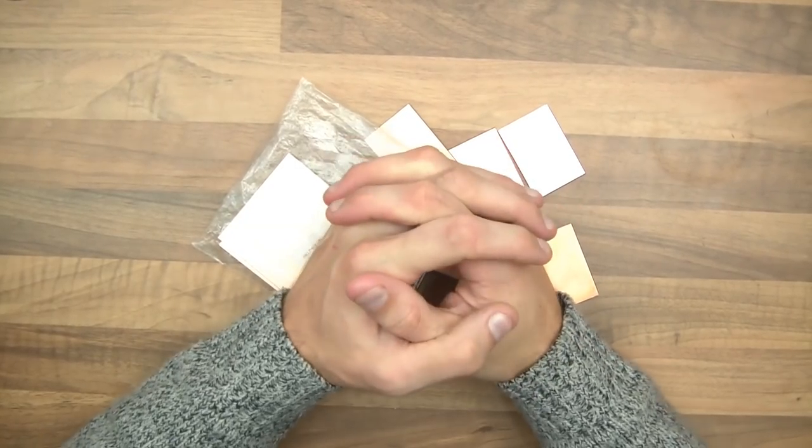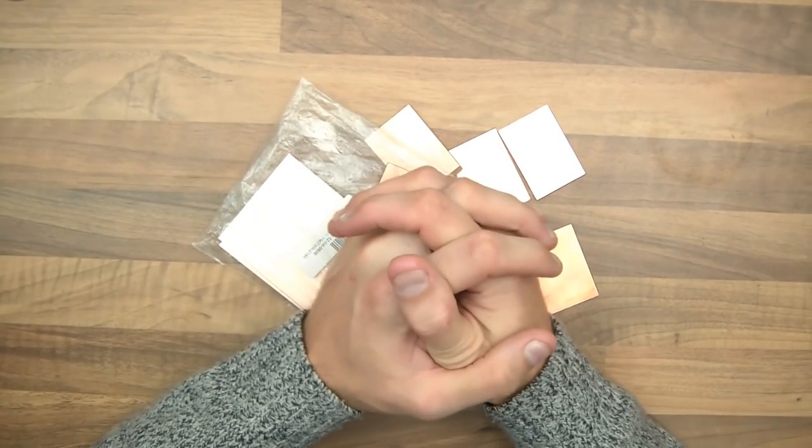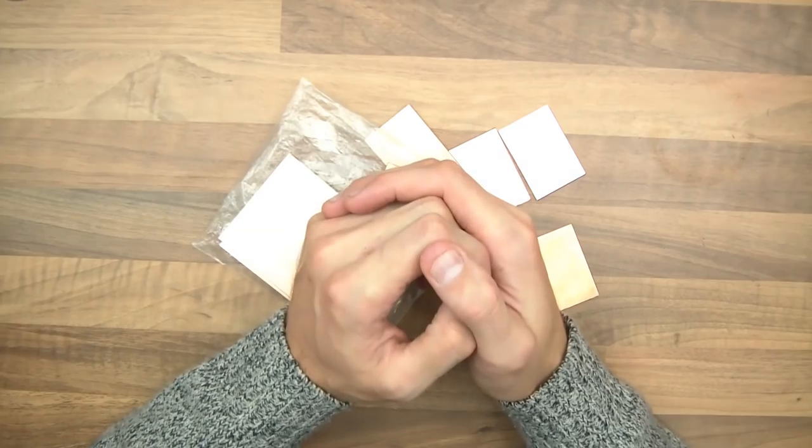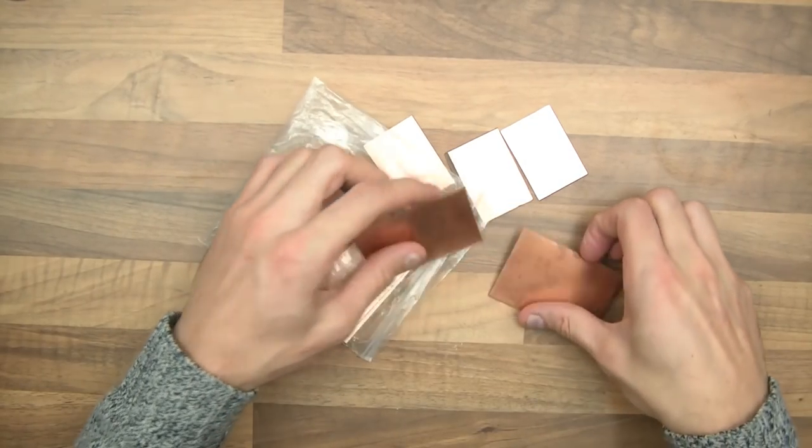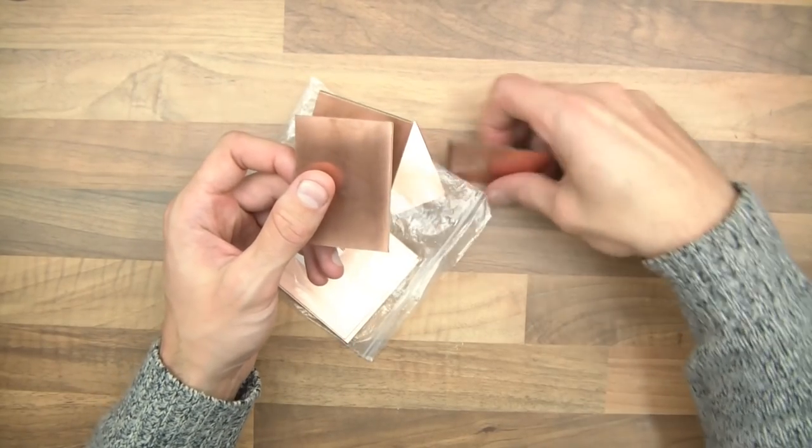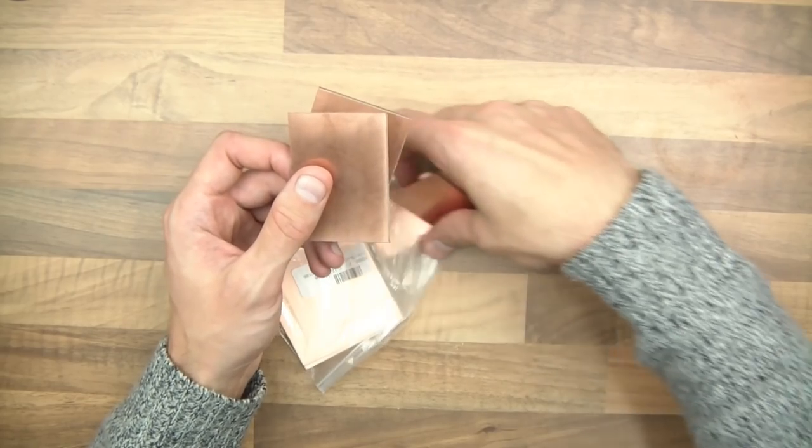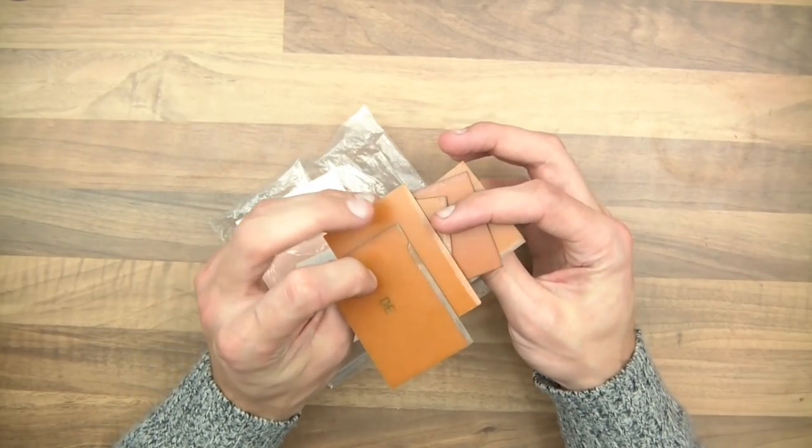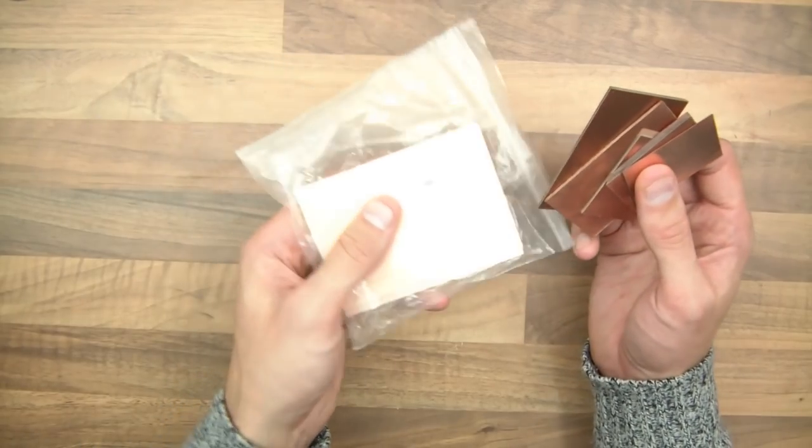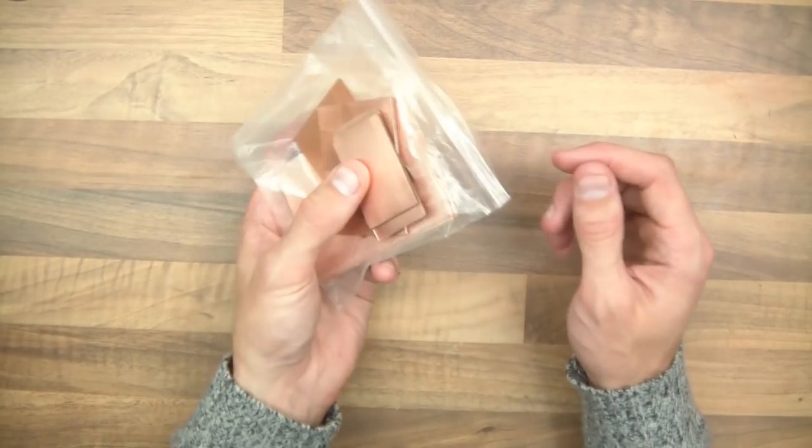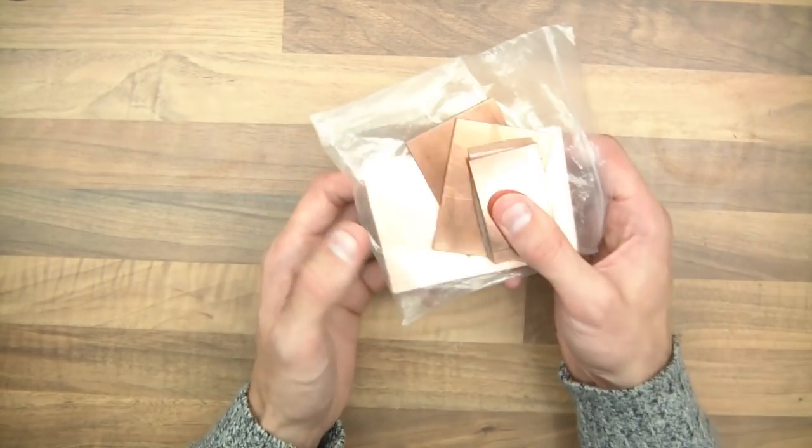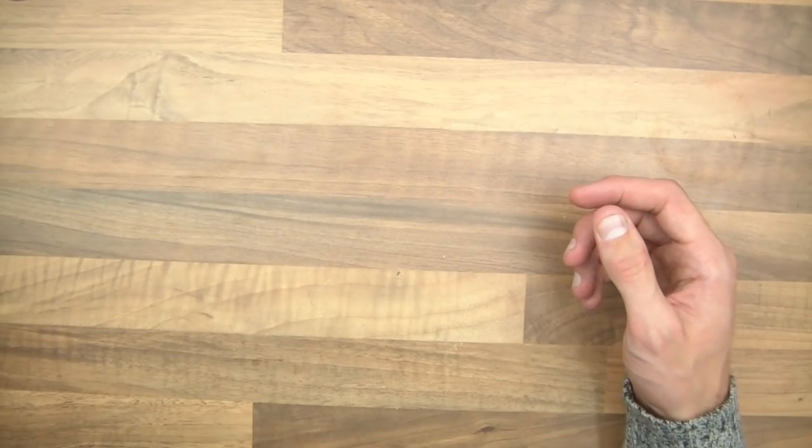So what do you need? We actually need quite a lot of different things but none of them are particularly expensive. The first thing is you need your copper clad PCBs or copper clad boards. They're actually quite cheap, a few pounds for a few of them. If you get them from China you can get them very cheap. You need PCBs to start with of course.